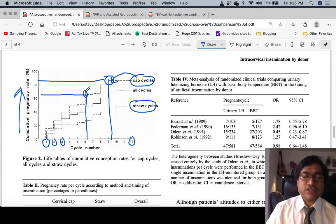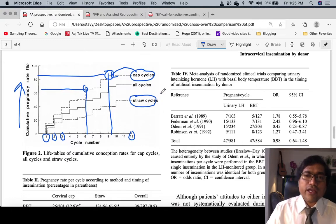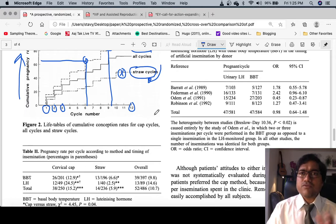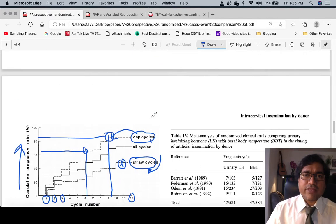Now if you do the intrauterine insemination with the catheter, this success is not better than the cap method. So ask me why - what is the reason why the cap method is giving you more success?